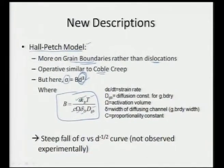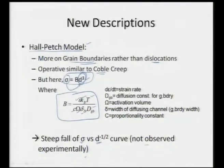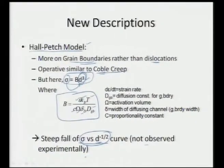Slip can also occur along the grain boundaries, and that is responsible for the overall stress being induced by the material for its further deformation. In this case, sigma has a dependence of d³. The steep fall of σ versus d^(−1/2) is not observed experimentally. For very fine grain sizes, the overall σ versus d^(−1/2) curve has not been exactly observed experimentally, so incorporation of Coble creep into the model requires further modification.